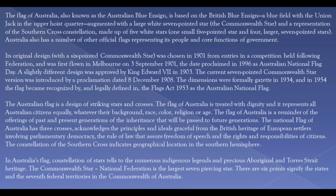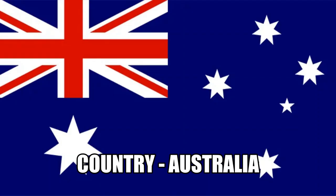The constellation of the Southern Cross indicates Australia's geographical location in the Southern Hemisphere. The constellation of stars also refers to the numerous indigenous legends and precious Aboriginal and Torres Strait Islander heritage. The Commonwealth Star, the largest seven-pointed star, has six points signifying the states and a seventh point representing the federal territories in the Commonwealth of Australia.